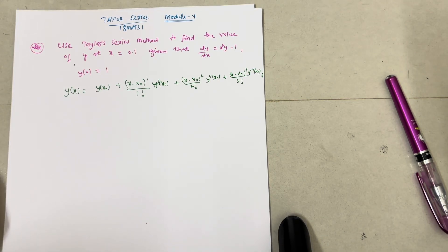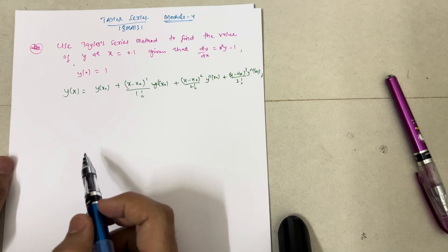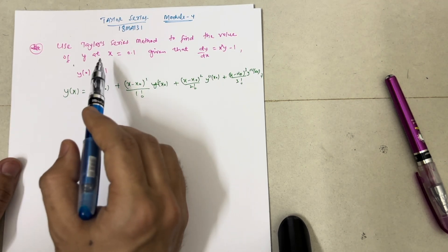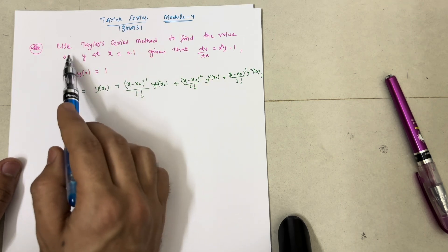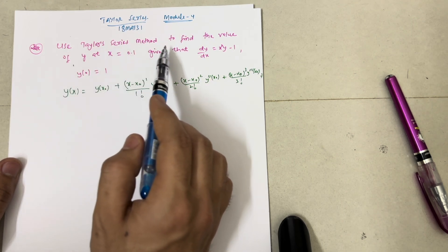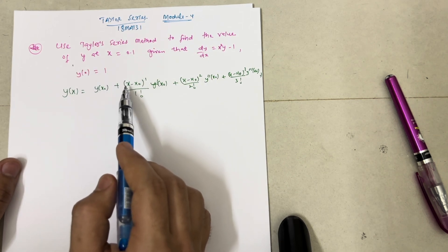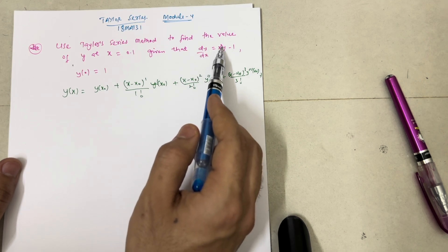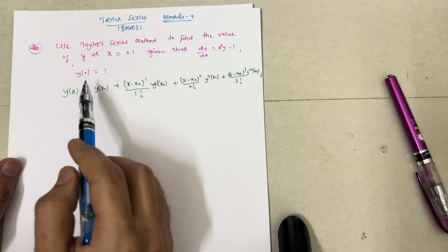Hello everyone and welcome back to another video. Hope you are all doing well and hope you are practicing for your subject mathematics 18 MAT 31 if you are having the backlog. In this video I will be discussing a super important question from module 4: use the Taylor series method to find the value of y at x = 0.1, given that dy/dx = x²y - 1 and y(0) = 1. This is called the initial condition.